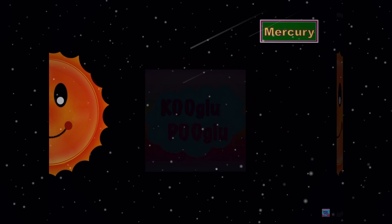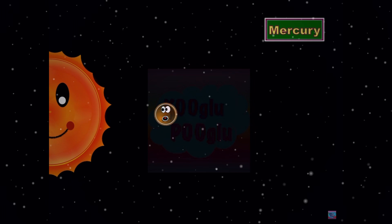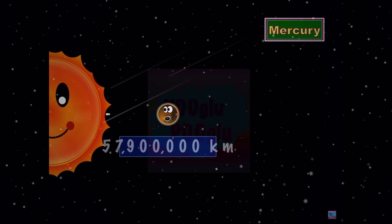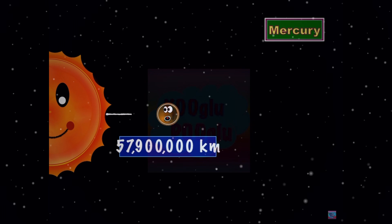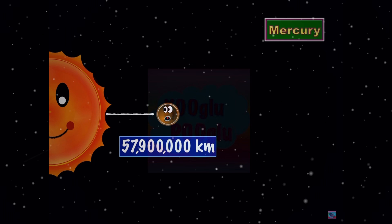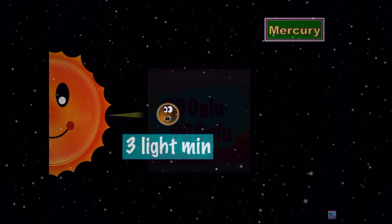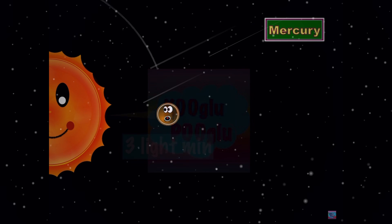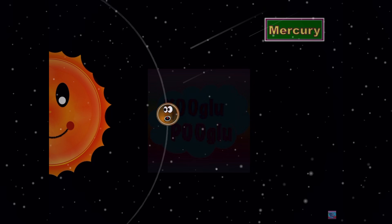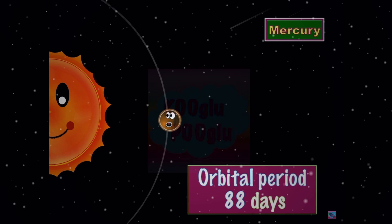Here we have Mercury, which is 58 million kilometers away from the Sun. It's three light minutes away from the Sun, and its orbital period is 88 days.